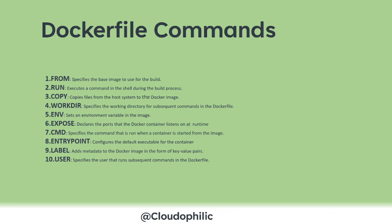ENTRYPOINT is very important — it is used because at runtime you can append or override parameters through the entry point. LABEL adds metadata to the Docker image in the form of key-value pairs. USER is also a command to note. These are the important Dockerfile commands, so please remember them.